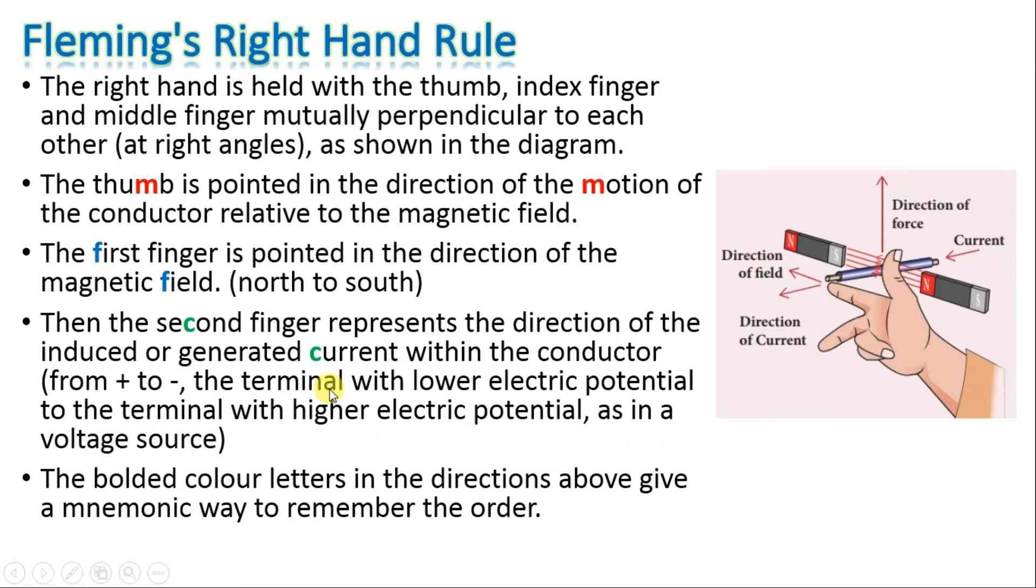The bolded color letters in the directions above give a mnemonic way to remember the order. Thumb has M and thumb is in the direction of motion. M for motion and thumb as M.